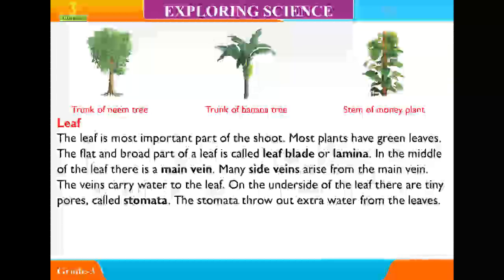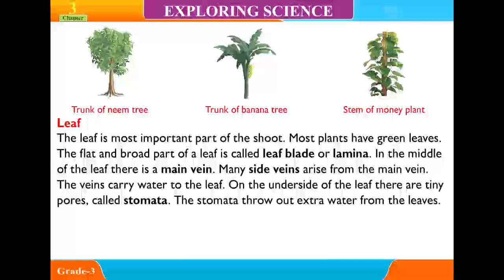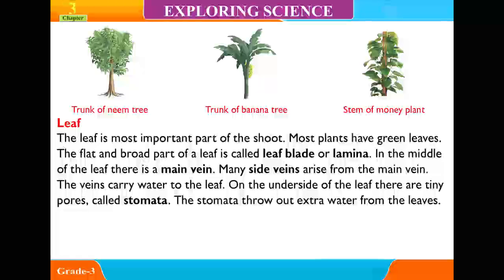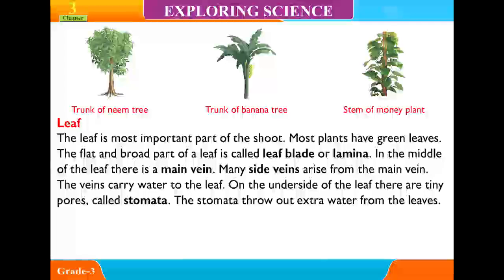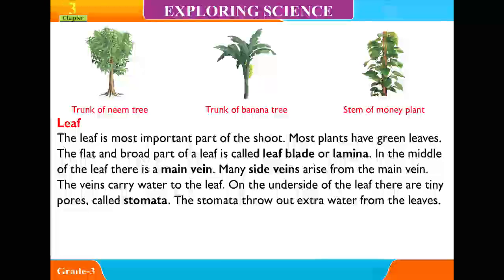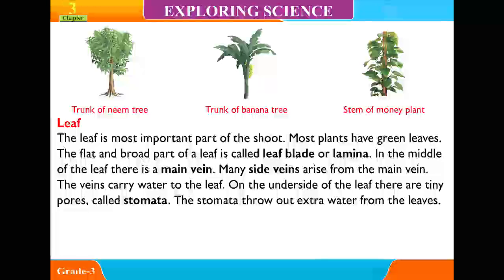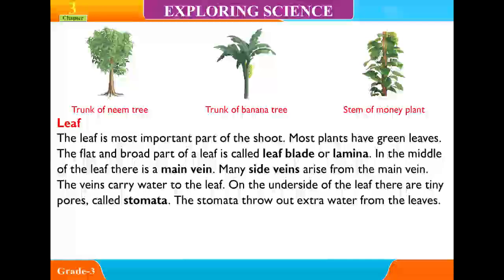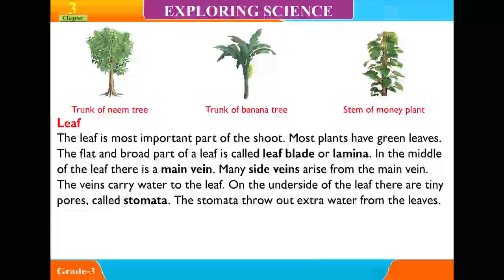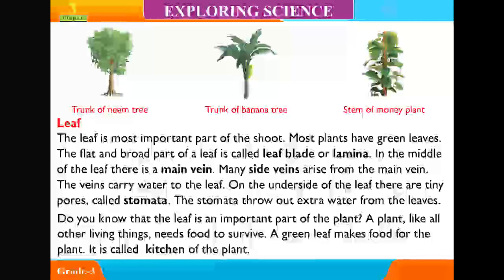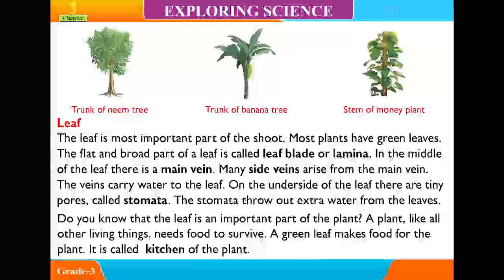The leaf is the most important part of the shoot. Most plants have green leaves. The flat and broad part of a leaf is called the leaf blade or lamina. In the middle of the leaf, there is a main vein. Many side veins arise from the main vein. The veins carry water to the leaves. A green leaf makes food for the plant. It is called the kitchen of the plant.